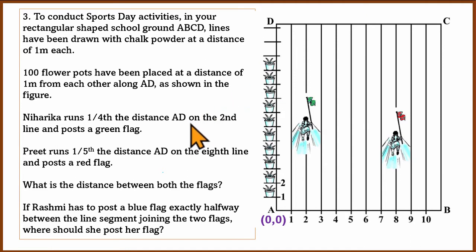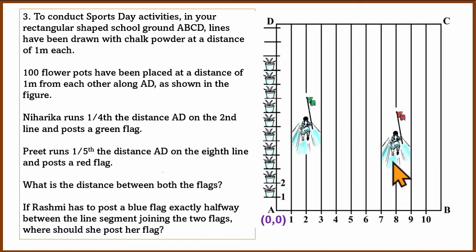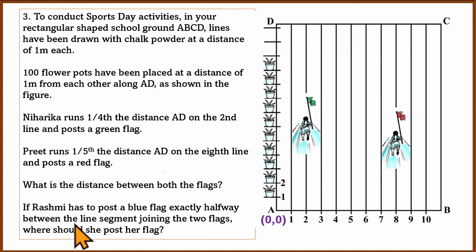The horizontal direction is the x-coordinate and the vertical direction, along the flower pots, is the y-coordinate. Niharika has to run one-fourth distance AD on the second line and post a green flag. Preet runs one-fifth distance AD on the eighth line and posts a red flag.